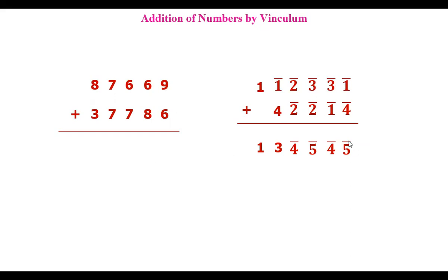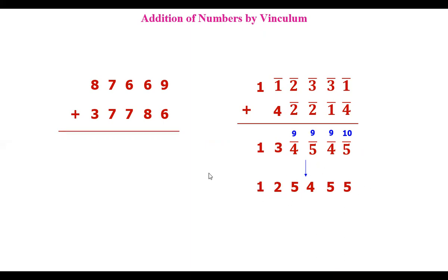Convert the vinculum sum back to decimal using Nikhilam Navata Charamam Dasataha: end is 10, all others 9. 10 minus 5 is 5; 9 minus 4 is 5; 9 minus 5 is 4; 9 minus 4 is 5; and 3 minus 1 is 2; one as it is. So this is the answer in decimal: 1, 2, 5, 4, 5, 4. You see how simple the addition is made.